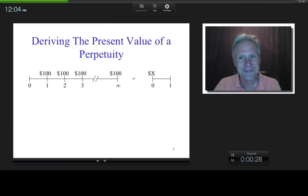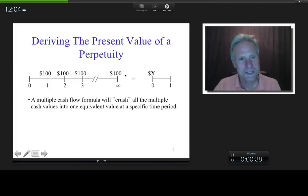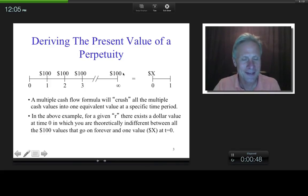Basically, there is a perpetuity right here, equal cash flows between equal time periods forever. And basically, what this formula is going to do is it's going to take all of these cash flows and it's going to crush them into one single number at a specific time period. So in this example right here, there exists a discount rate such that mathematically, you'd be indifferent between all of these cash flows right here and one single number right here in this example at time zero. So that's what we're going to derive.